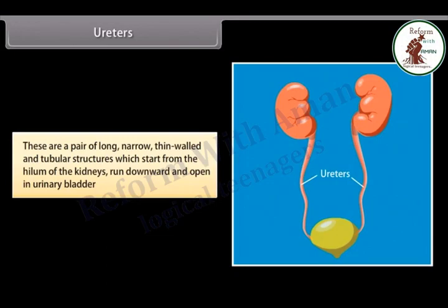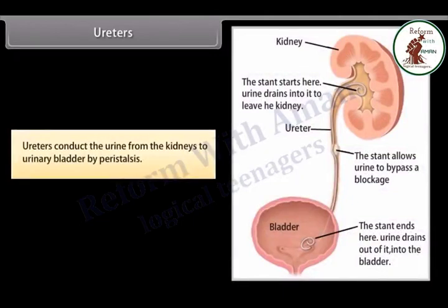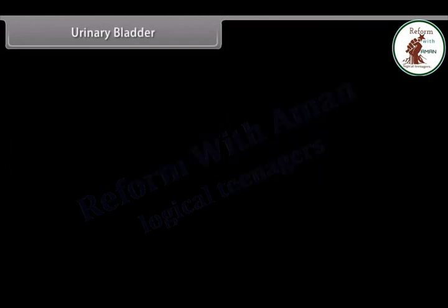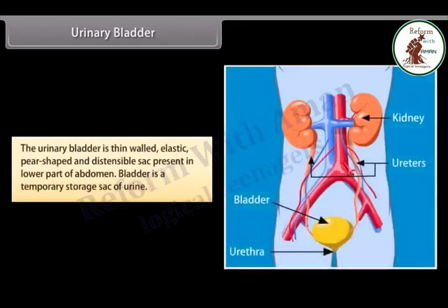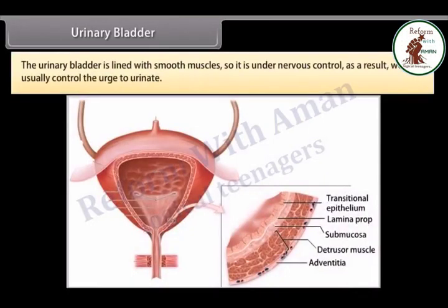The ureters carry urine from the kidneys to the urinary bladder by peristalsis. The urinary bladder is a thin-walled, elastic, pear-shaped, and distensible sac present in the lower part of the abdomen. It is a temporary storage sac of urine. The urinary bladder is lined with smooth muscles, so it is under nervous control; as a result, we can usually control the urge to urinate.